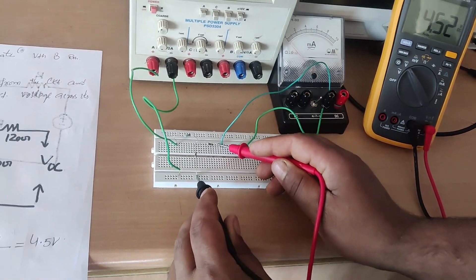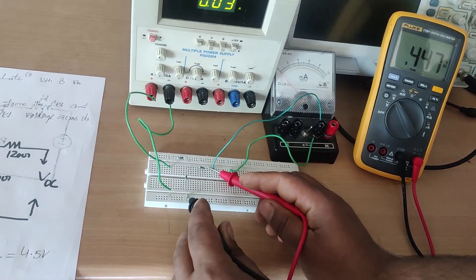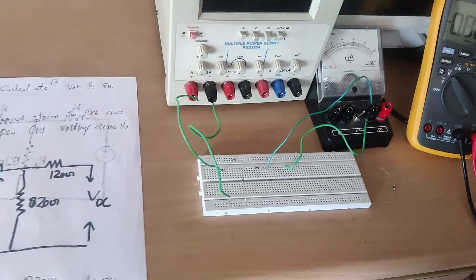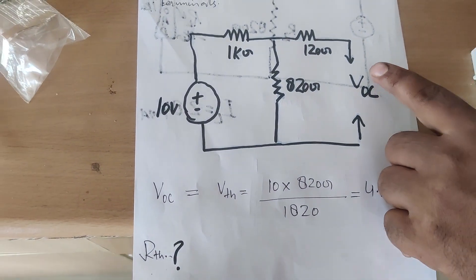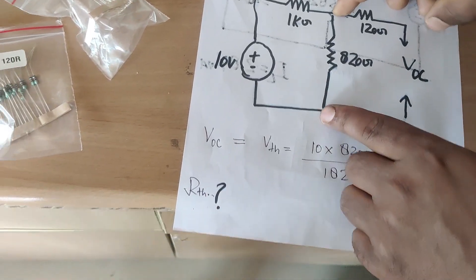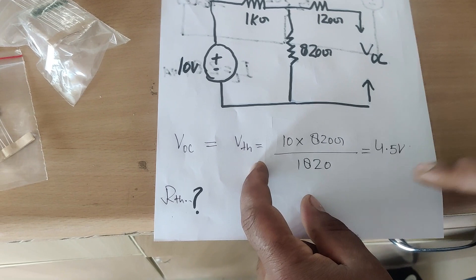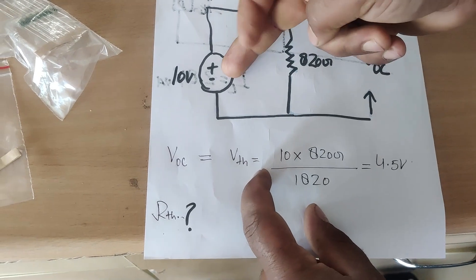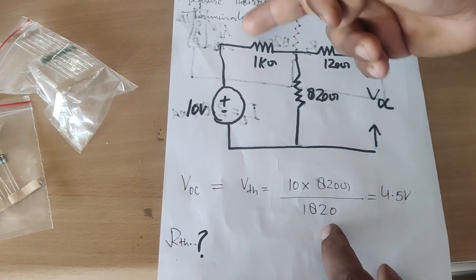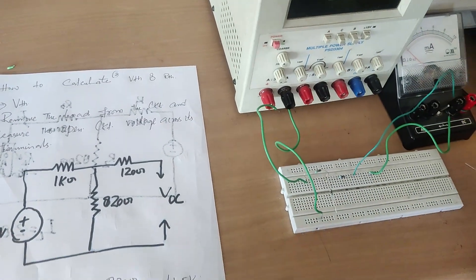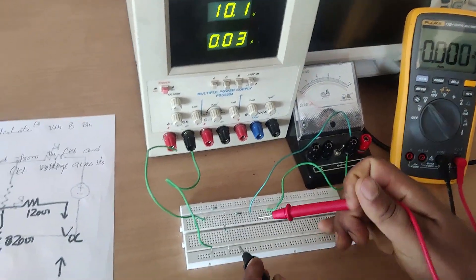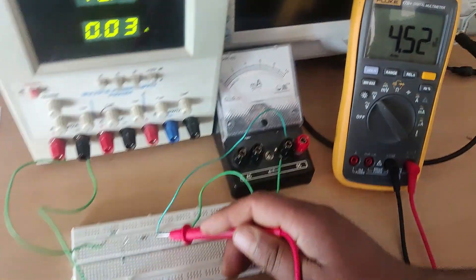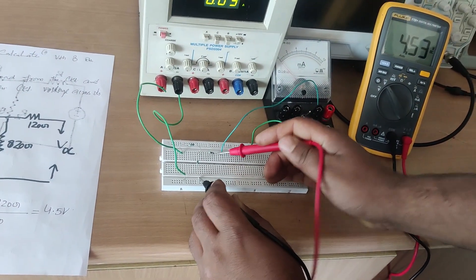I removed the load resistance of 1000 ohms and measured the open circuit voltage, which comes out to be 4.5 volts. Theoretically, using the voltage divider formula, the open circuit voltage VTH also comes out to be 4.5 volts. Measured by multimeter it is also 4.5 volts, so VTH is 4.5 volts. Now I have to calculate RTH.